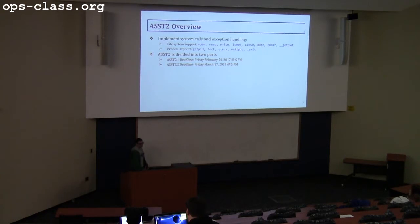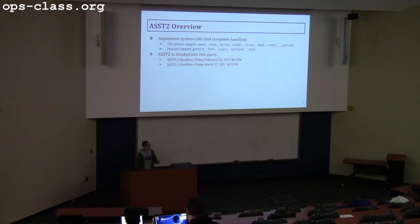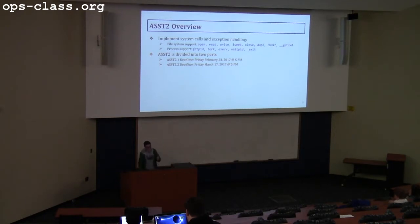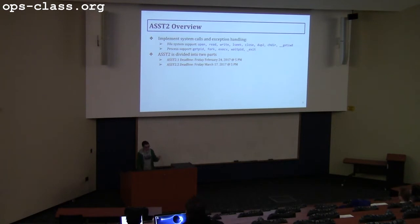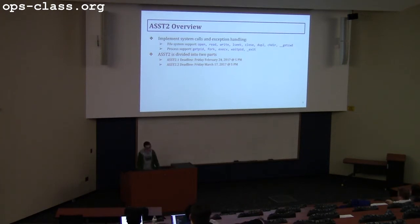Assignment 2 is about implementing system calls and exception handling. You have two kinds of system calls: file syscalls and process syscalls. For the file syscalls, you have open, read, write, lseek, close, dup2, change directory, and get current working directory. For the process syscalls, you need to implement getpid, fork, execv, waitpid, and exec. You have two deadlines: the first is this Friday, and the next is around four weeks from now, March 17.